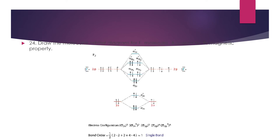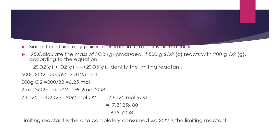Question 24: Draw the molecular orbital diagram of F2 and predict its magnetic properties. The MO diagram shows all electrons are paired in F2. Therefore F2 is diamagnetic.